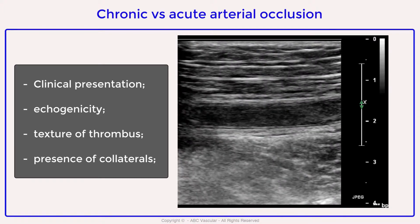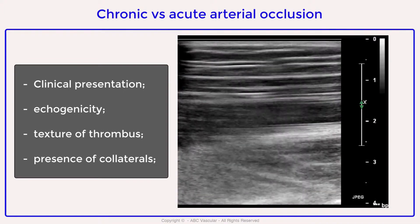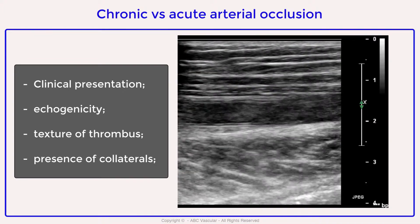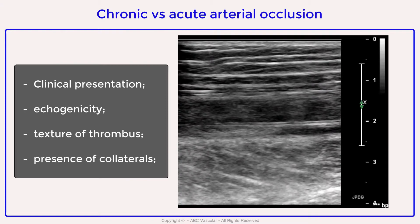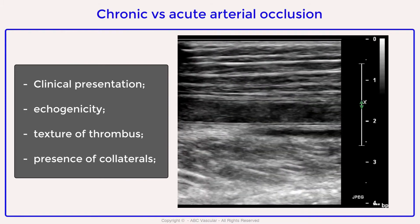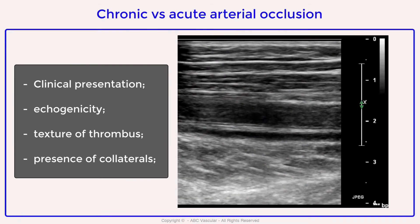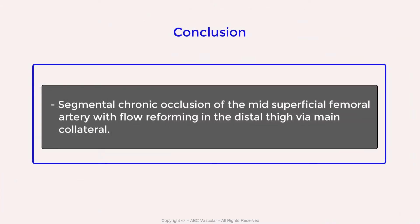The presence of arterial collateral vessels, alongside the clinical presentation and the echogenicity and texture of the thrombus — which appears well attached to the wall, non-mobile, and hyperechoic — are indicative of a chronic occlusion rather than an acute occlusion.